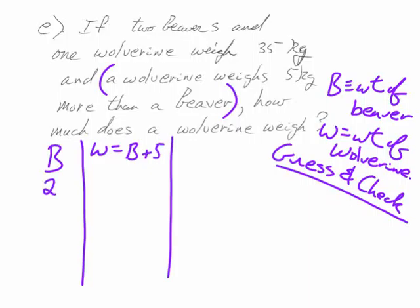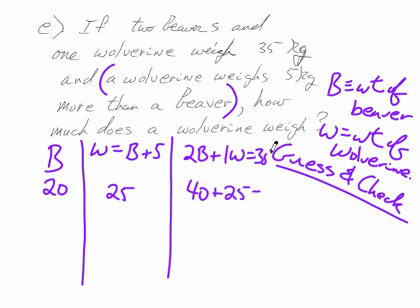So now let's start guessing. I'm going to guess at 20, which means the wolverine is 25, because you take the beaver, which we're guessing is 20, and five is 25. Now we check. So we're going to take two beavers and one wolverine. That looks like about 65 or so. So it's going to be two 40s. And so does it equal 35? No, man, it's way off. So that doesn't work.